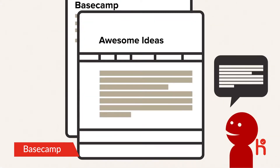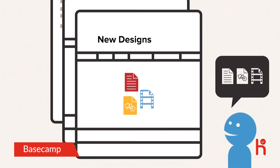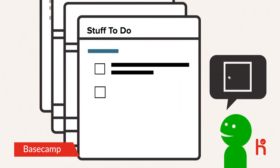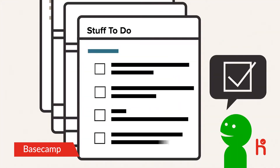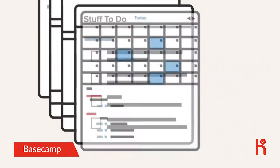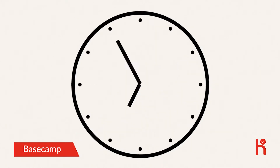Jonas can toss some ideas to Anton. Anton can share his designs. Jeff can assign tasks to Joan, and Joan can easily see her deadlines and brag about finishing early. All of your information is safe, secure, and lasts forever in Basecamp.